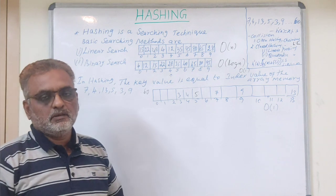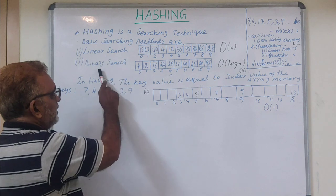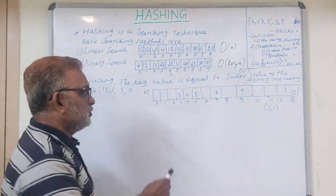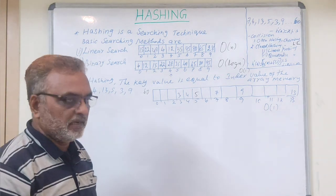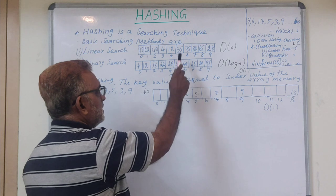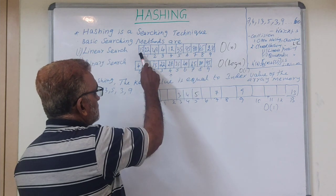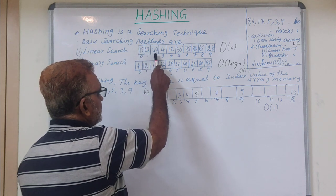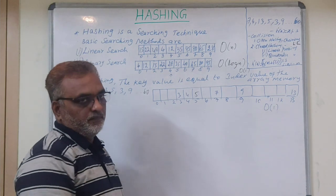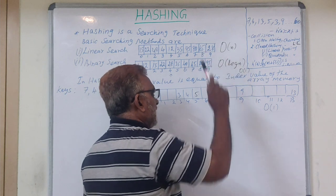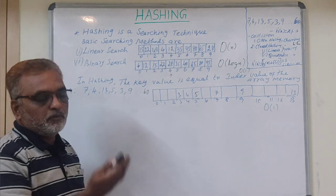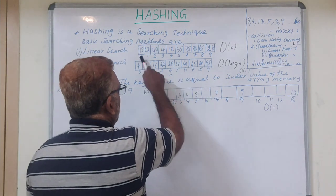Among the popular methods are linear search and binary search. In linear search, elements are given in random order. If you want to search for a particular element in an array, you have to search one after another. For example, to search for element 95, starting from the 0th location, on the 6th location the value 95 is available. The order of linear search is O(n). In this case we have to perform 7 search operations.